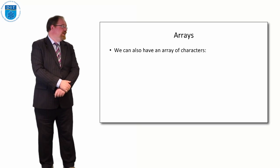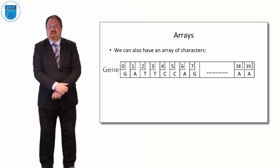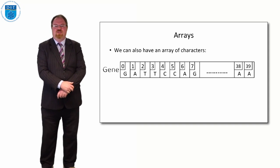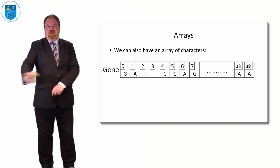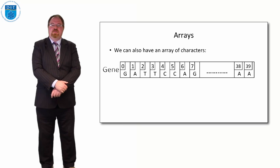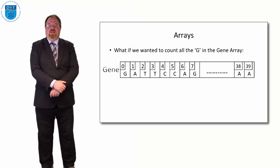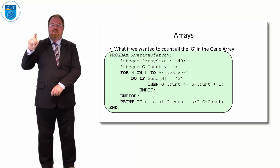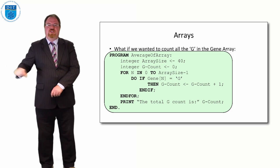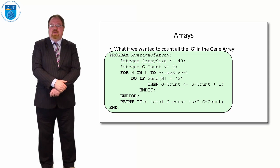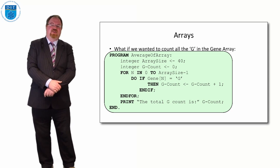We can also have an array of characters — for example, a gene sequencing array storing the four genome types A, C, G, and T. If we want to count how many G's are in the gene string, we start from index 0, go to the end of the array, and if the current element equals 'G' we add one to a g_count. At the end of the loop we print the total g_count.